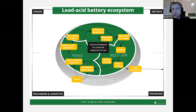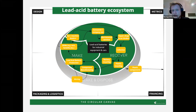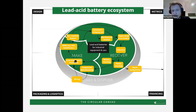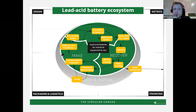Looking at the circular canvas, the main activities in the lead acid battery ecosystem start with mining lead and other components. These raw materials are used in component manufacturing — all the handles and covers for batteries — and in battery production itself. The batteries then move on to OEMs: car manufacturers for car batteries, or forklift manufacturers for industrial applications. These cars or forklifts then go on to machine dealers, car dealers, or directly to consumers.